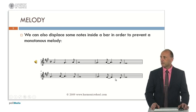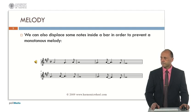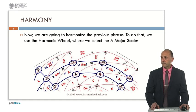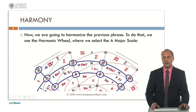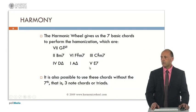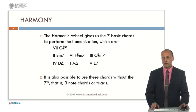Let's listen to this first phrase. The next step is to harmonize this phrase. To do that, we will use the harmonic wheel. Here, we selected the A major scale, and then the harmonic wheel gives us the basic seven chords in this key. They are four-note chords, or tetrads, but we can also use these chords without the seventh — that is, we can use three-note chords, or triads.